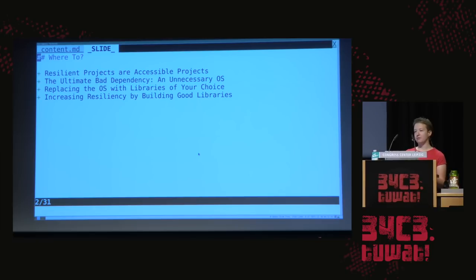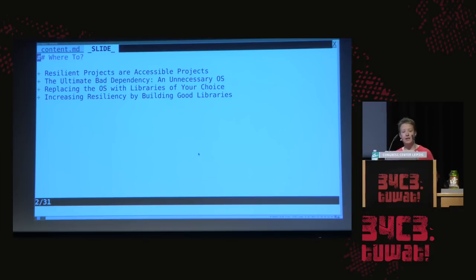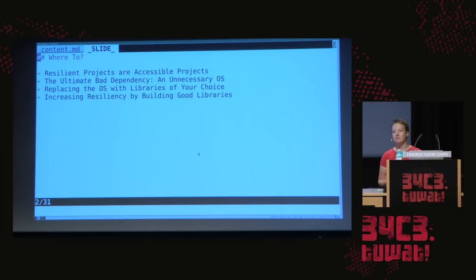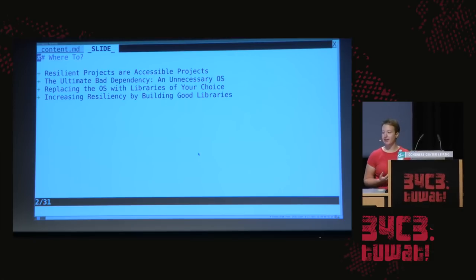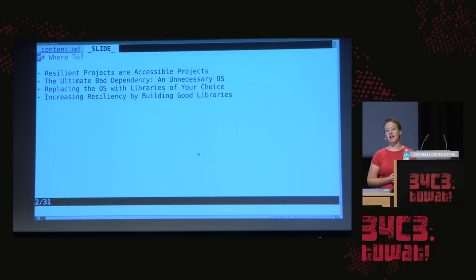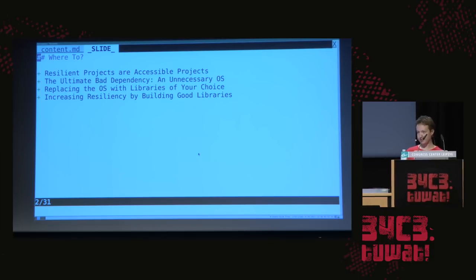I'll talk about some of the properties that a project might have that lead it to be resilient, especially as that relates to whether a project is understandable. I'm going to talk about what I think of as the ultimate bad dependency in your project, which is a traditional monolithic operating system, and how you can replace that bad dependency with something that fits better into the way you normally handle your dependencies.